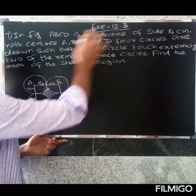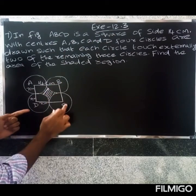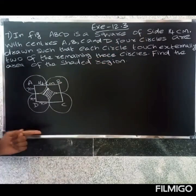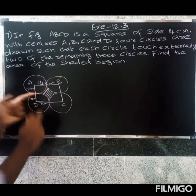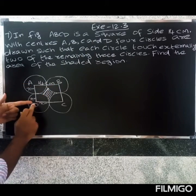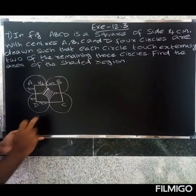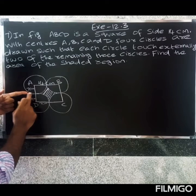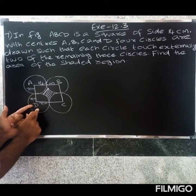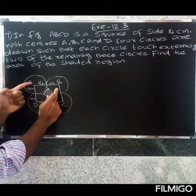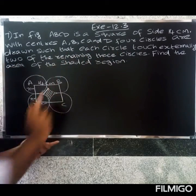Welcome friends. In this problem, ABCD is a square with side 14 centimeters. With centers A, B, C, D, four circles are drawn such that each circle touches externally two of the remaining three circles. Each circle at corner A touches circles at B and D, and so on — each circle touches two of the remaining three circles.